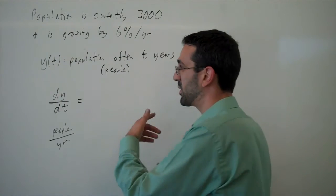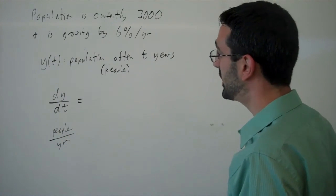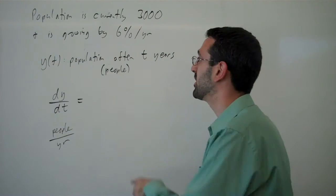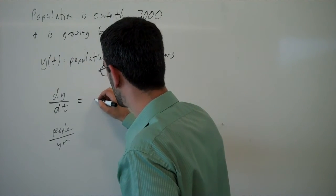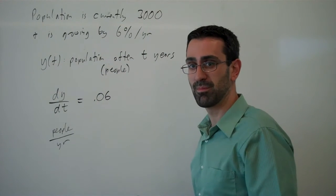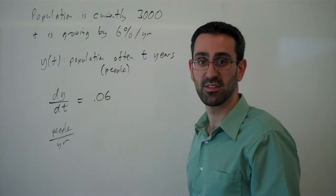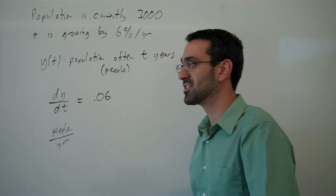We might look at our problem and say, how is the number of people changing each year? Well, it's changing by 6%, so 0.06 per year. But 6% of what, right? 6% of whatever the population currently is. If the population is very small, we get small growth; if the population is very large, we get large growth.